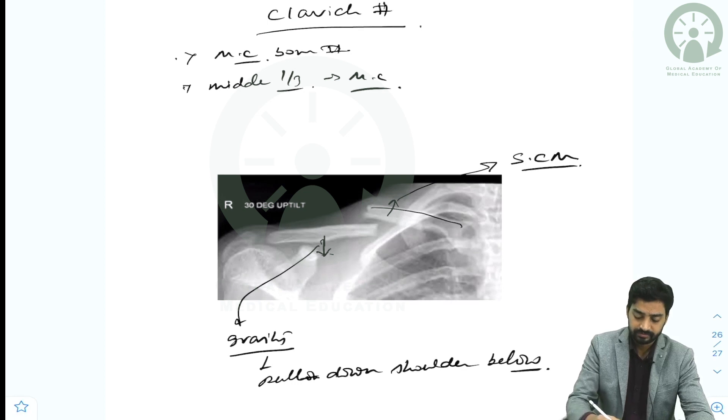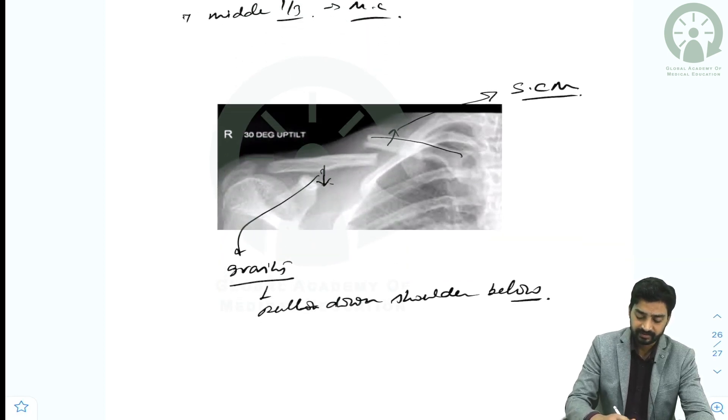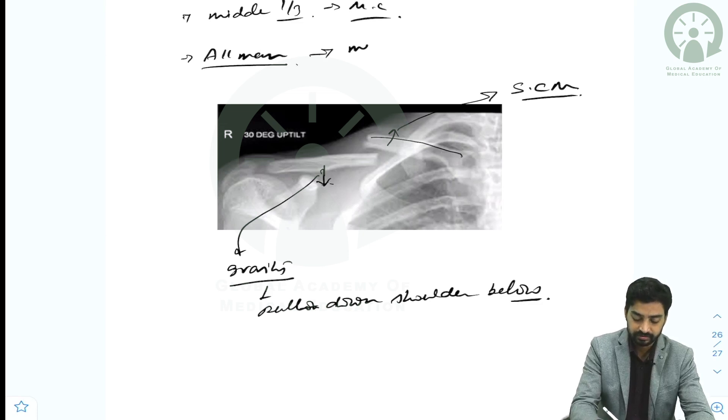Basically, Allman divided this fracture into three parts. The fracture classification is Allman classification, which divides it into the medial one-third, the middle one-third, and the lateral one-third.